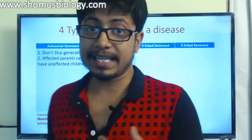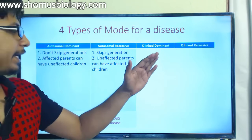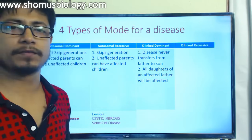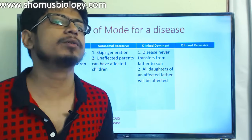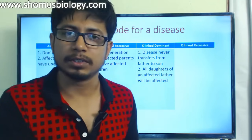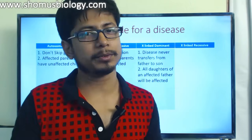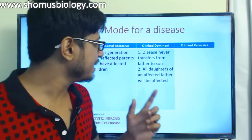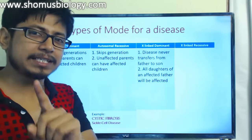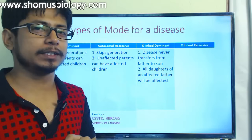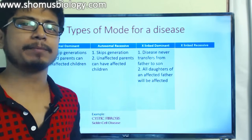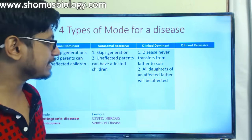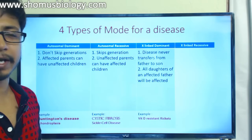Now we go to the third type: X-linked dominant. In X-linked dominant, the disorder never transfers from father to son - it always tends to transfer from father to daughter and from mother to son. Another very important and interesting feature of X-linked dominant is that if a father is affected, then all the daughters of that father will be affected. An example of X-linked dominant is vitamin D-resistant rickets.